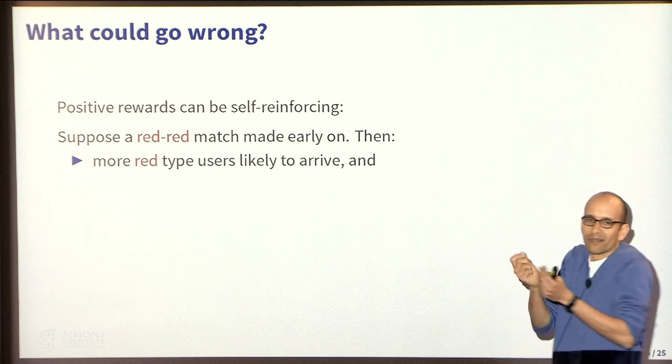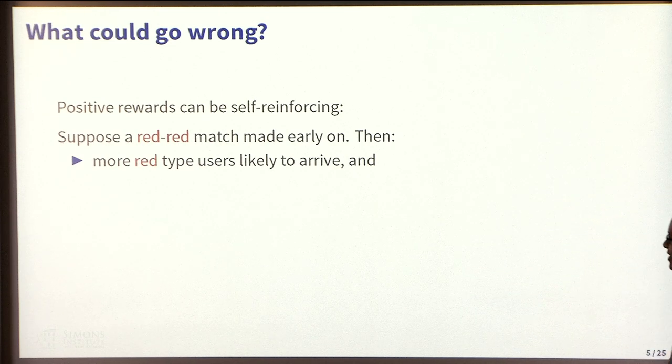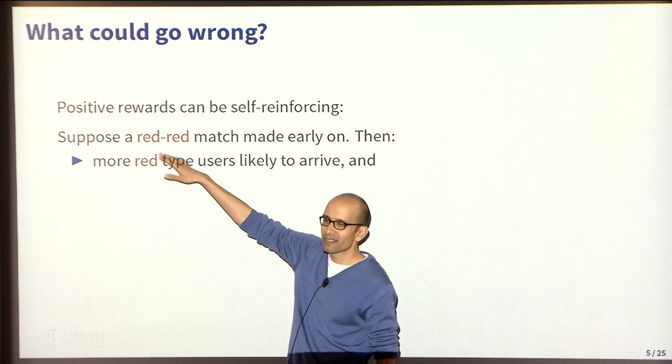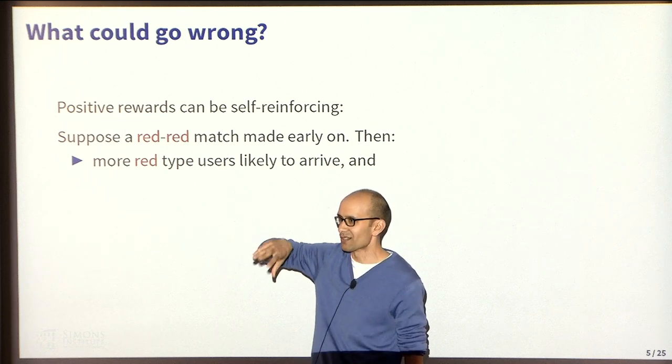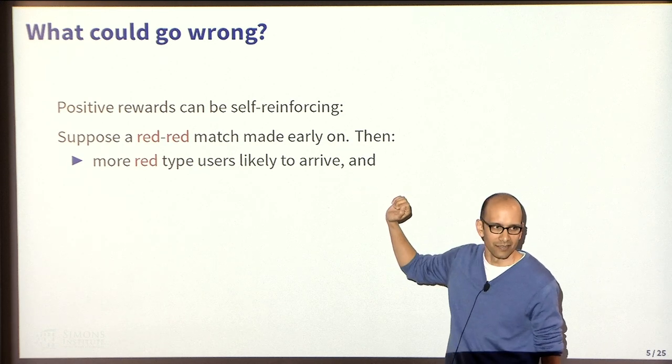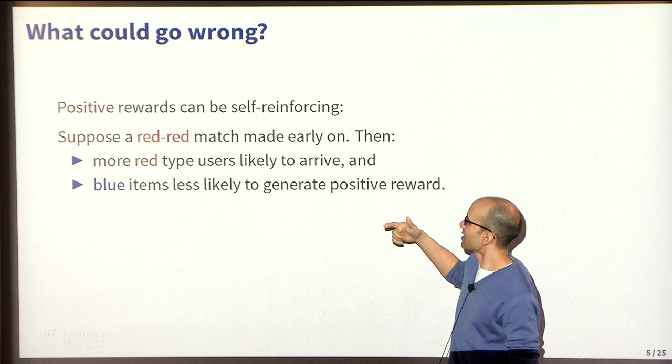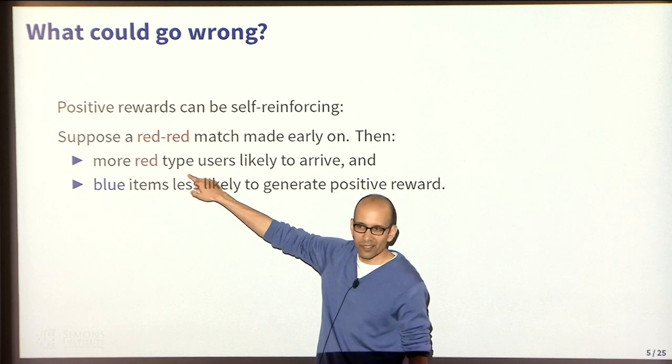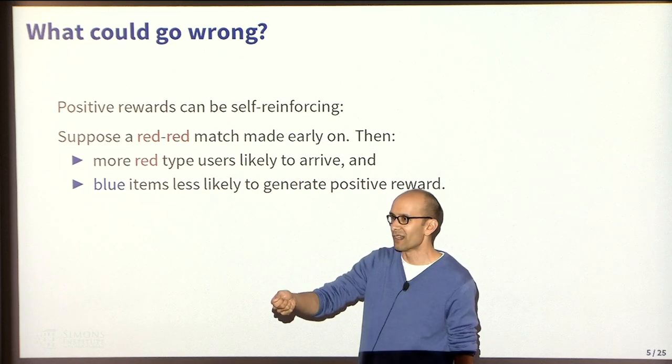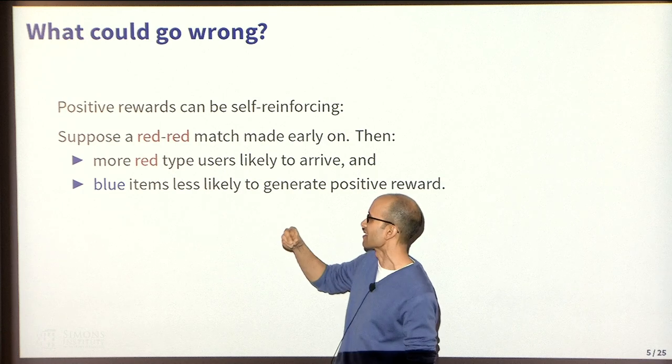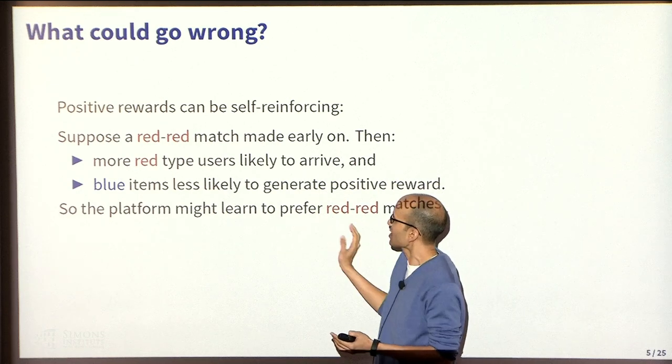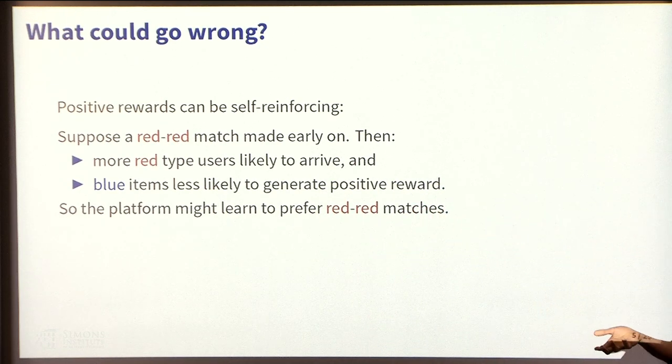The first thing is, the positive externality says that when red-type users have good experiences that tends to attract more users of the same type in the future. That'll mean that more red-type users are likely to arrive because of this single event. But the other thing that happens is that, because more of these users are arriving, should the platform choose to show blue items, it will generate less reward on those choices. Essentially, both of these phenomena push the platform in the direction of preferring red-red matches.